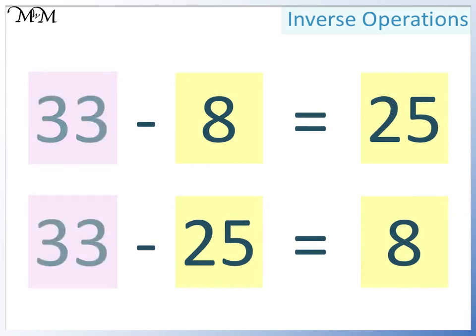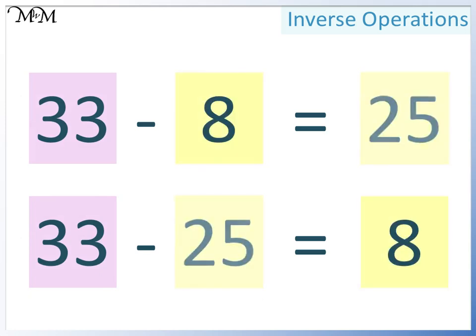As long as the largest number is at the start of the calculation, the order of the two smaller numbers doesn't matter.